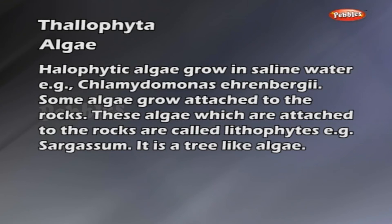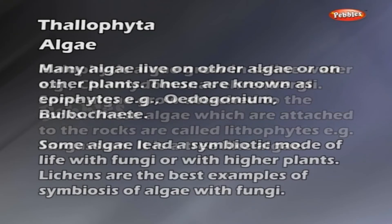Halophytic algae grow in saline water, for example Chlamydomonas Ehrenbergii. Some algae grow attached to the rocks; these algae are called lithophytes. Example: Sargassum, which is a tree-like algae.